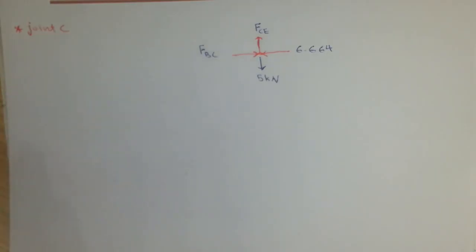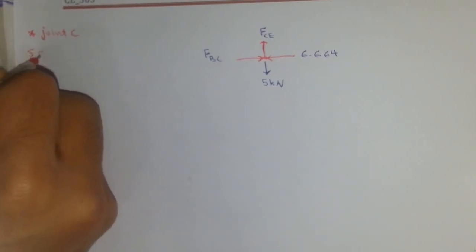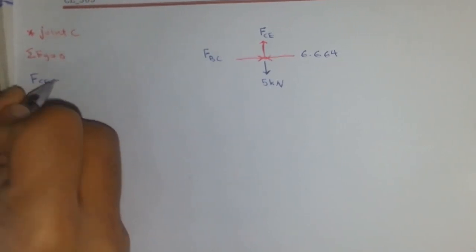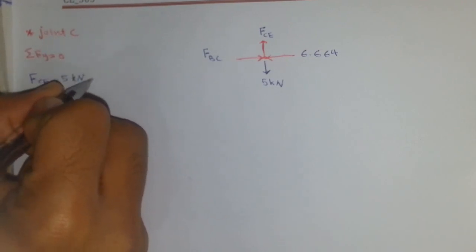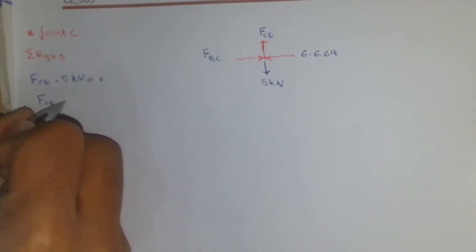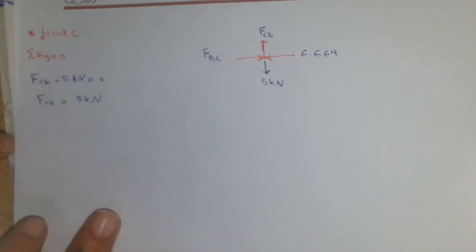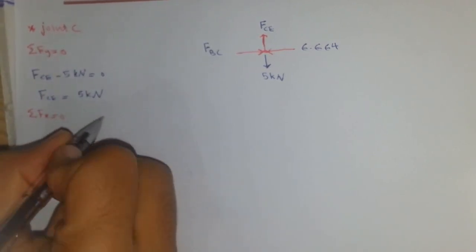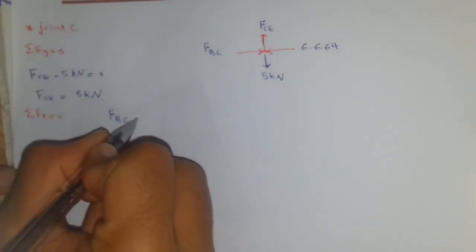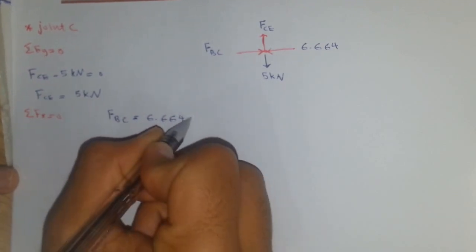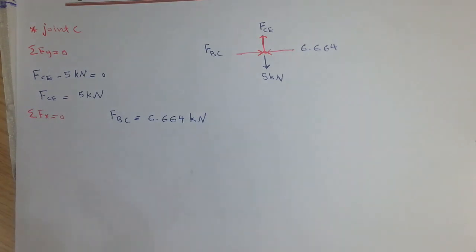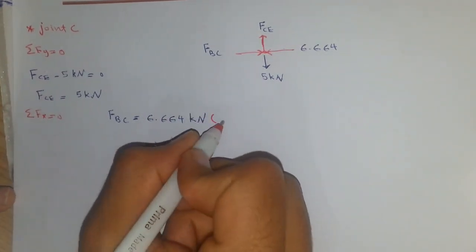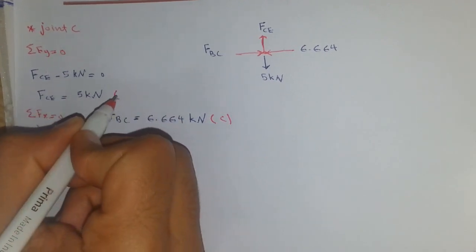Moving to joint C: summation of Fy equals zero gives F_CE minus 5 kilonewtons equals zero, so F_CE equals 5 kilonewtons. Summation of Fx equals zero gives F_BC equals 6.664 kilonewtons. According to the representation of that joint, F_BC is in compression and F_CE is in tension.